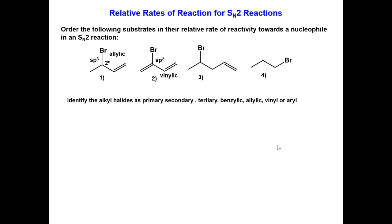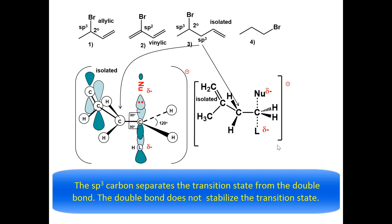The leaving group in compound 3 is secondary. It is not allylic. The double bond is isolated from the transition state by an sp3 carbon, and no orbital mixing or delocalization will occur.